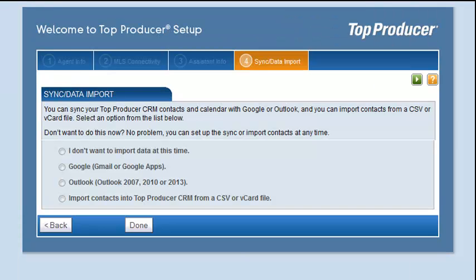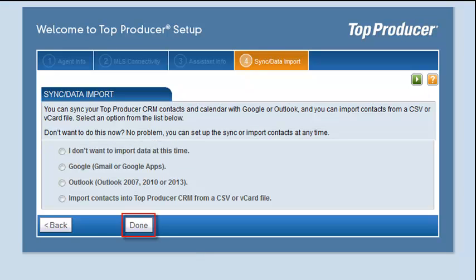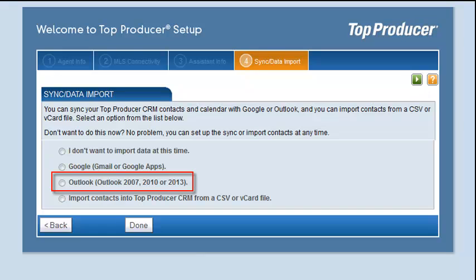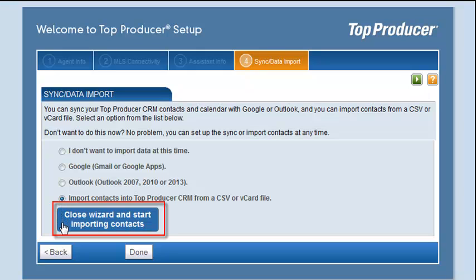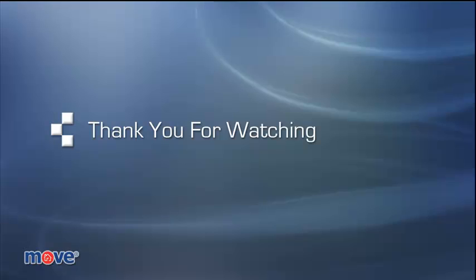On the Sync Data Import step, you can choose to import contacts from a file, or choose to synchronize Top Producer with your Google account or with Outlook. If you do not want to import or sync any data right now, select the I don't want to import data at this time option, and then click Done. If you would like to synchronize with Google, select the Google option. You'll be asked to log into your Google account to verify the integration. If you would like to synchronize with Outlook, you'll be asked to download and install the Outlook add-in. If you would like to import contacts from a file, select the last option, then click the button to end the Setup Wizard and start the Import Wizard.